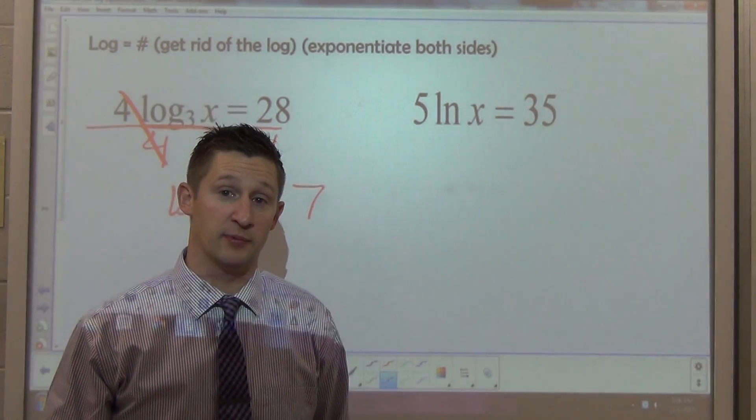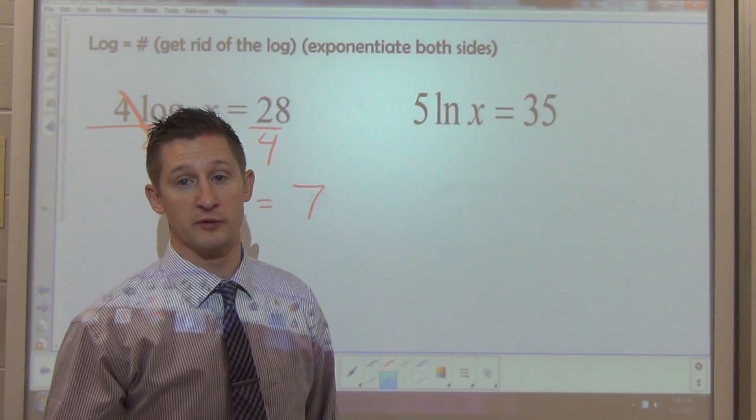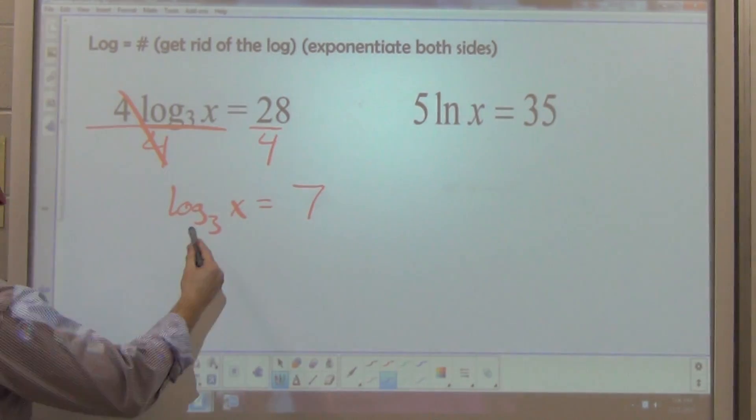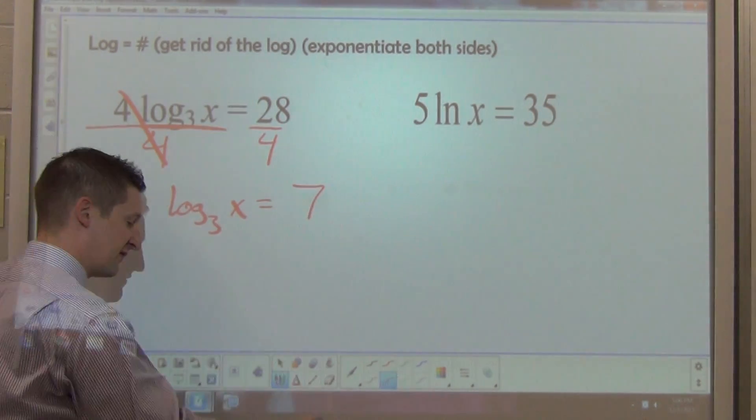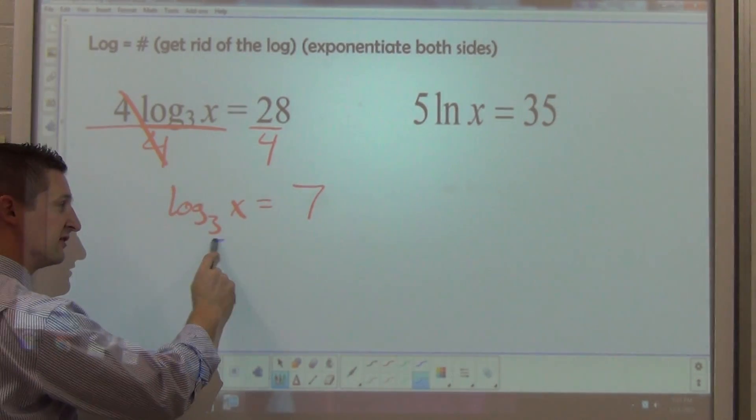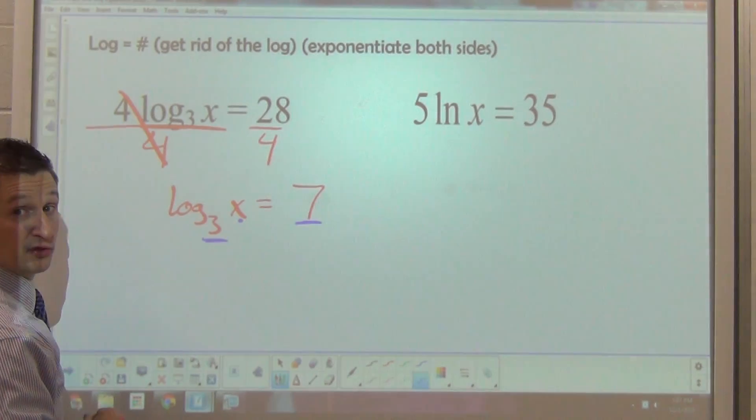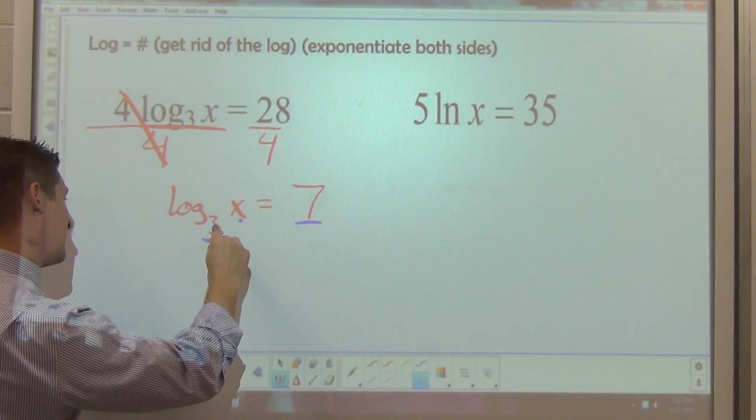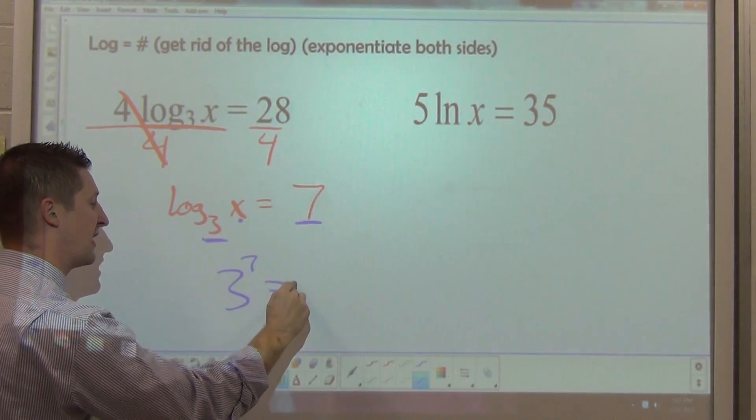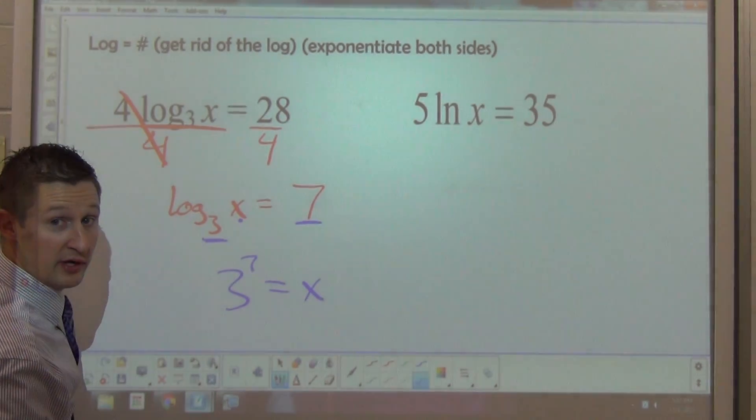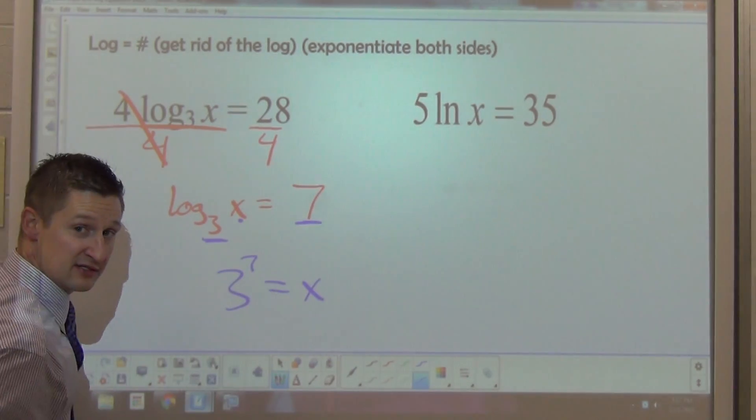Now, you could think of this a couple of different ways. If you remember how logarithms work, this logarithm, log base 3 of x equals 7, means that if I take this base and raise it to this power, I get that number. So you could potentially just know, hey, I can rewrite this as 3 to the 7th and that must equal x. And that would work out okay. That would be a big number, that's what x is equal to.